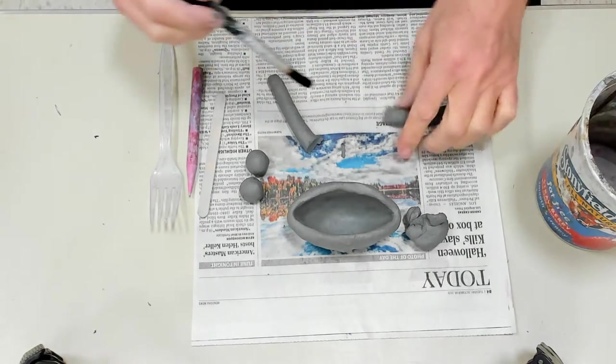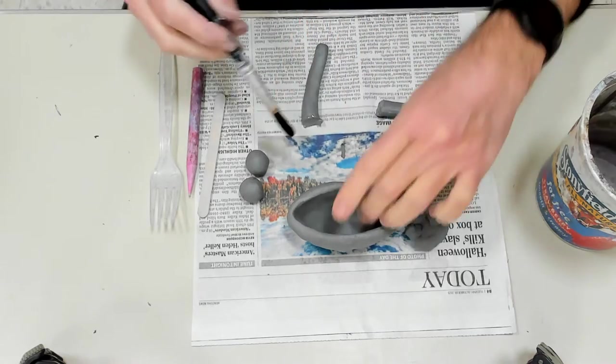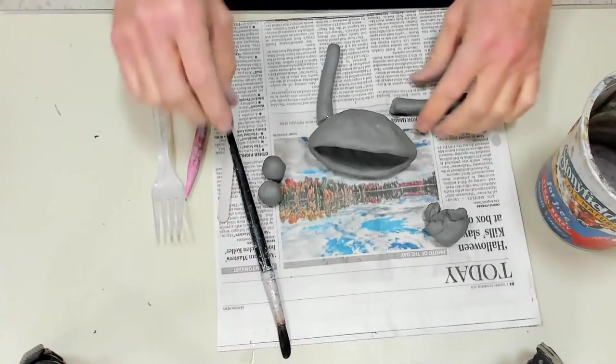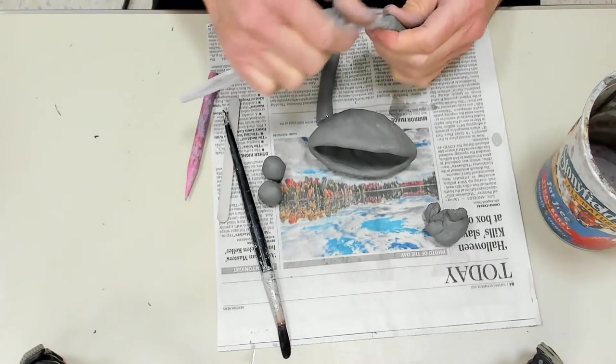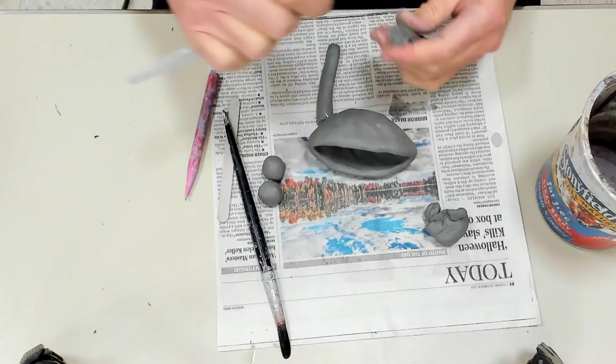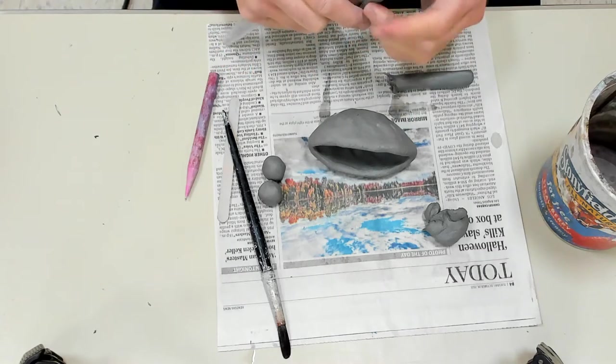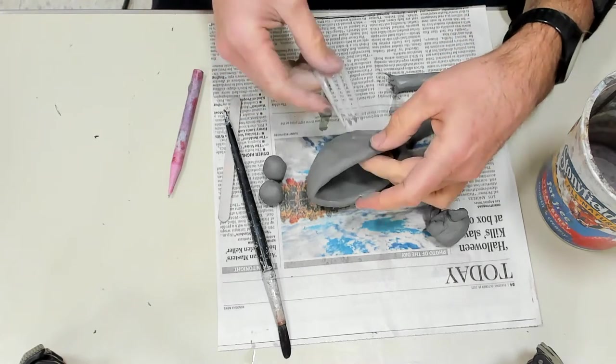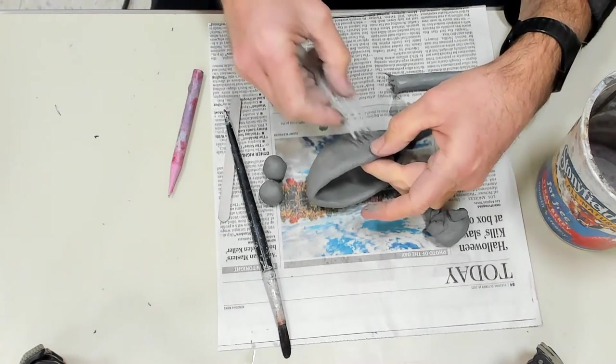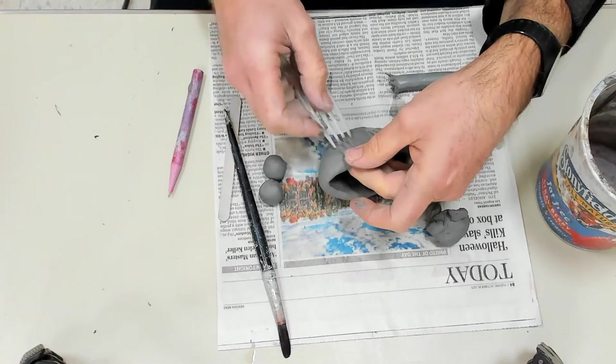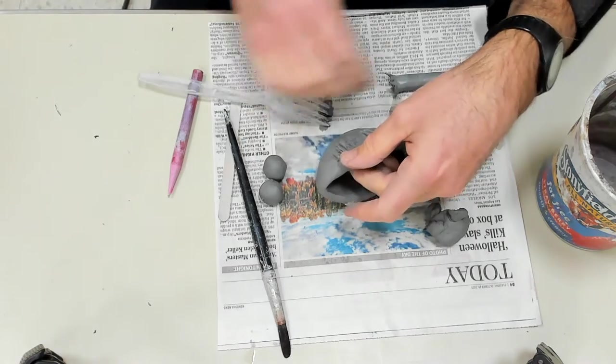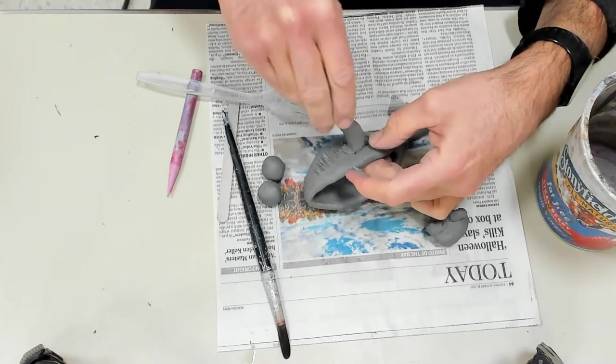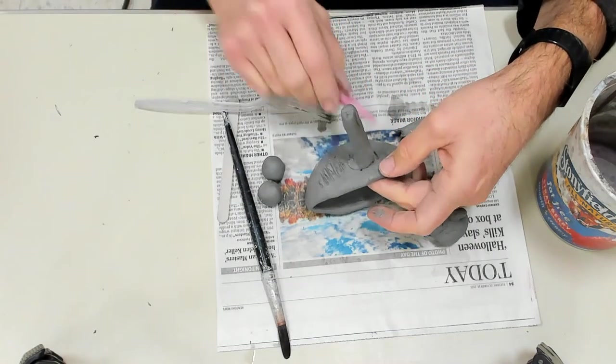I'm going to put a little water here and here where I want them to be attached. I'm going to take my fork and scrape that so it has nice deep grooves in it. Then I'm going to scrape the spot where I'm going to attach it with nice deep grooves. Then I'm going to take my piece and push it in there.